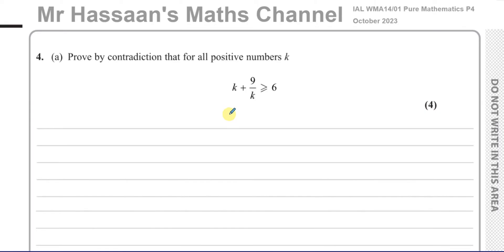Proof by contradiction is basically where you want to prove a statement. To prove it, you assume the opposite of that statement and show that this leads to some sort of illogical situation, which proves that what you assumed was false. Therefore the original statement you're trying to prove is true.